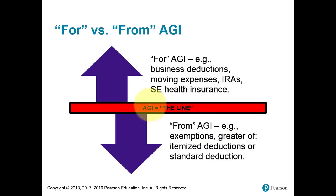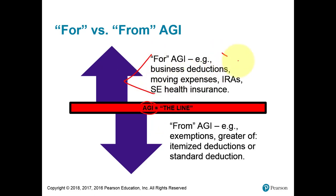So here is AGI. If you remember in our first project we had to prepare a 1040, and at the bottom of that first page was the AGI — the adjusted gross income number. To get to this number you were maybe able to subtract out some expenses. These expenses are called for-AGI deductions to get to the AGI number.